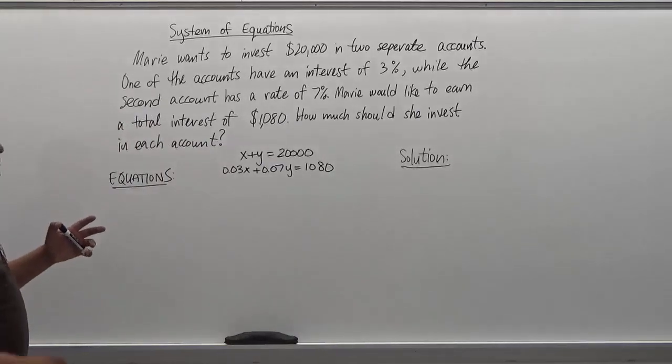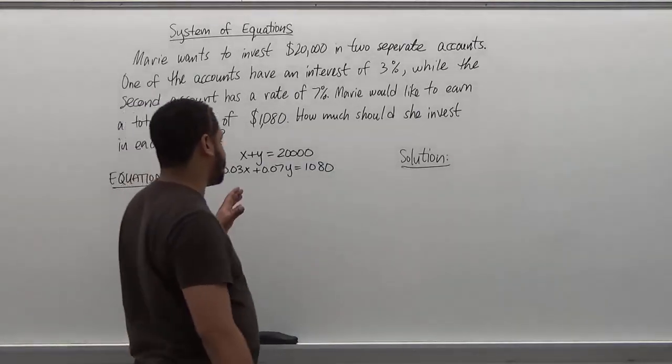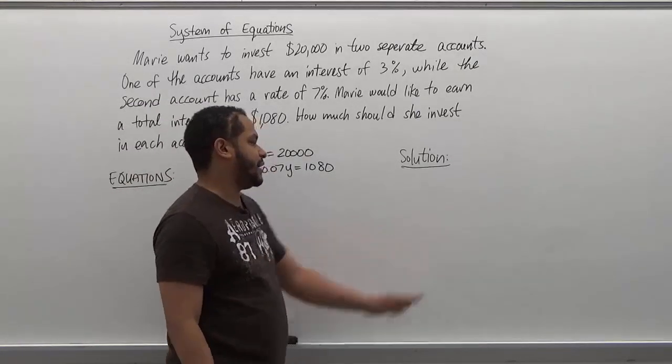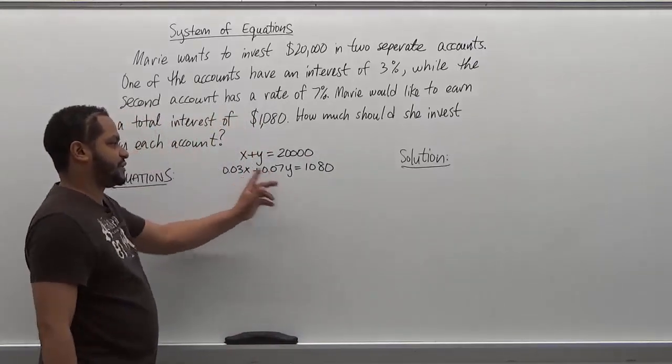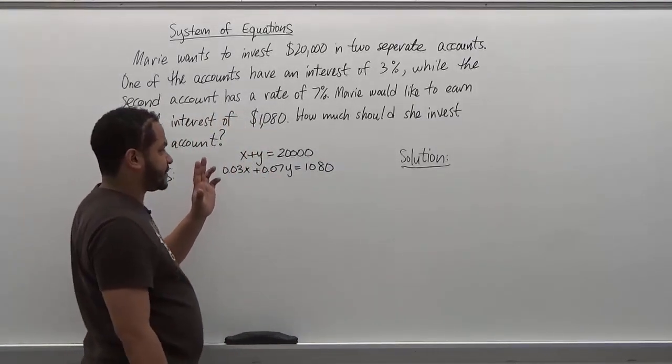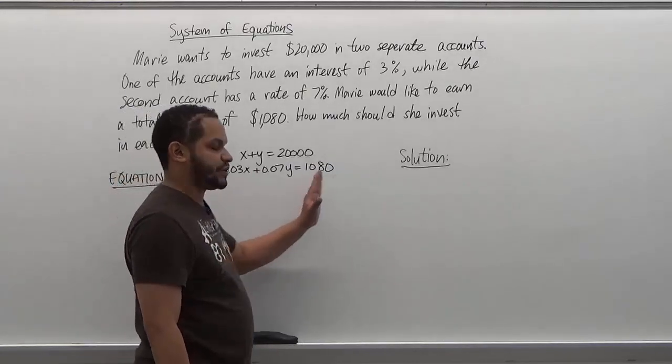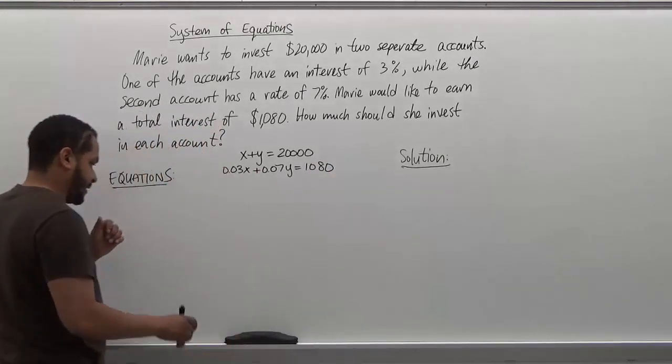Now remember, we want to get a system of equations with a solution. So we should have a coordinate of x and y. If there's no solutions, both variables will cancel out. Or if there's infinite solutions, all three terms will cancel out to zero.